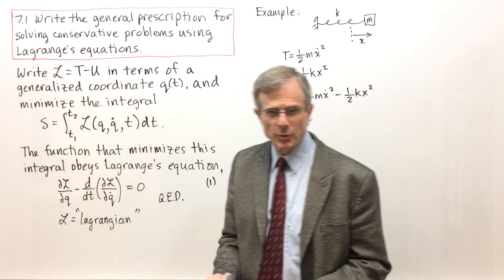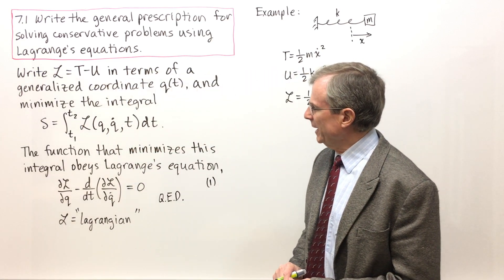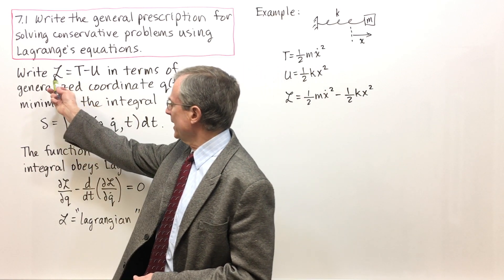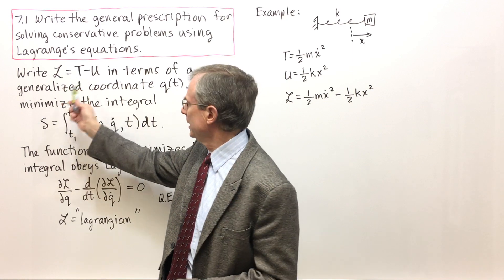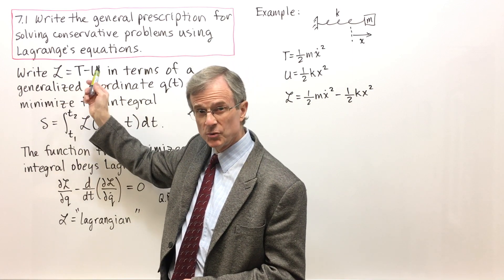We use a script L to define it, and it is defined as the difference between T, the kinetic energy, and U, the potential energy.